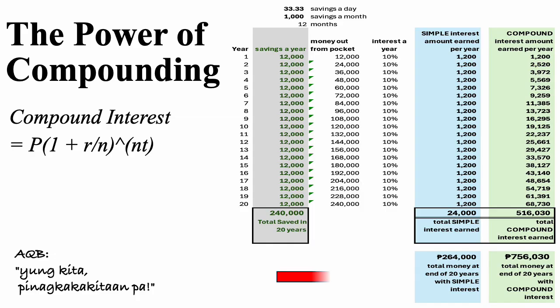Compound interest is even more powerful. With compound interest, you earn interest on your original investment and on the interest that accumulates over time. This is called interest on interest. Over time, compounding can grow your money faster than simple interest. It is one of the key reasons to start saving and investing early.